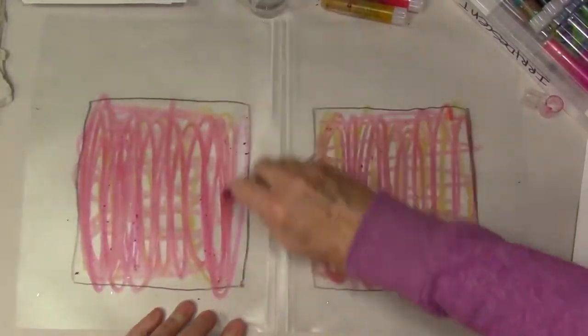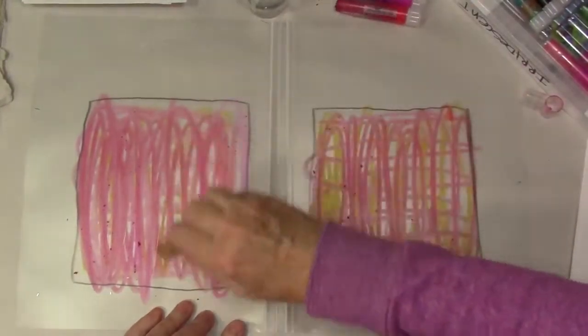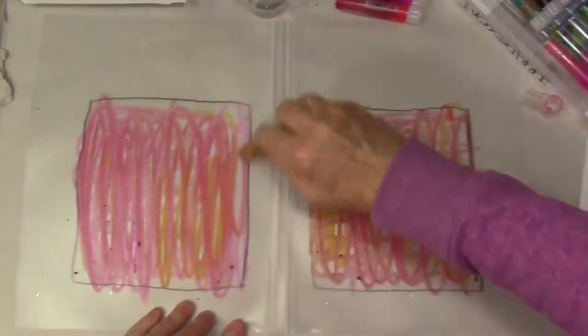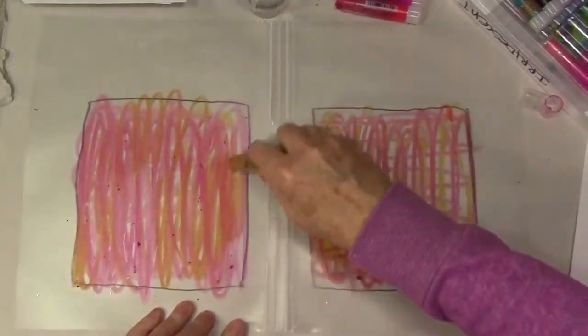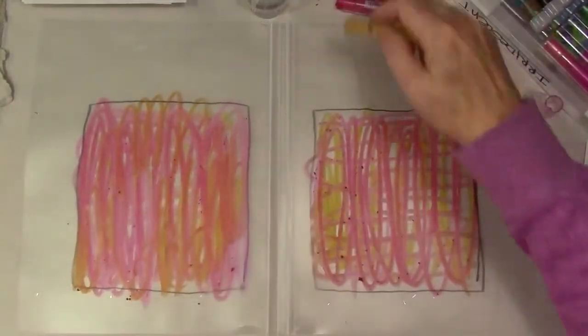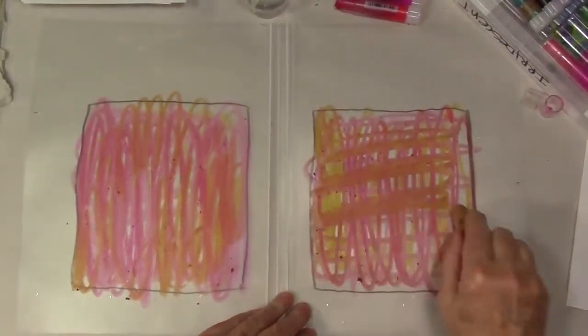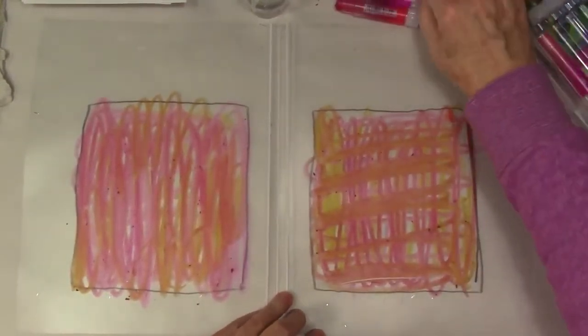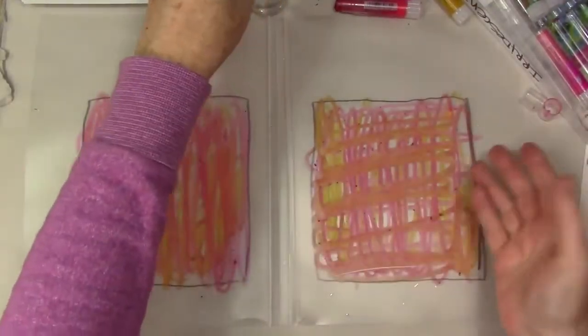I'm adding more color in layers and trying to stay in the neighborhood, the analogous color family, so that I won't get into grays or browns. They can be nice, but for this project I wanted to keep the color clear.